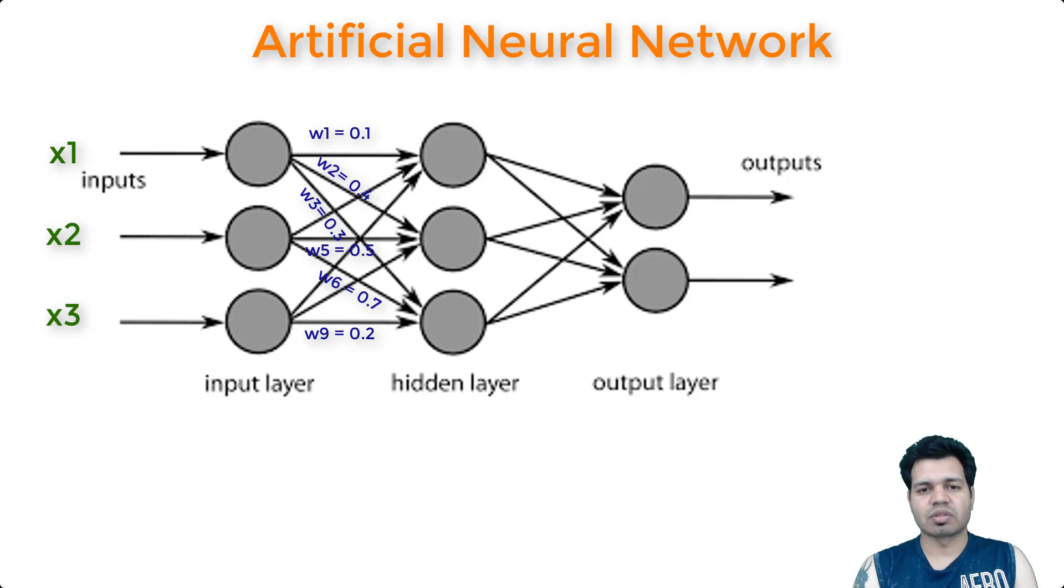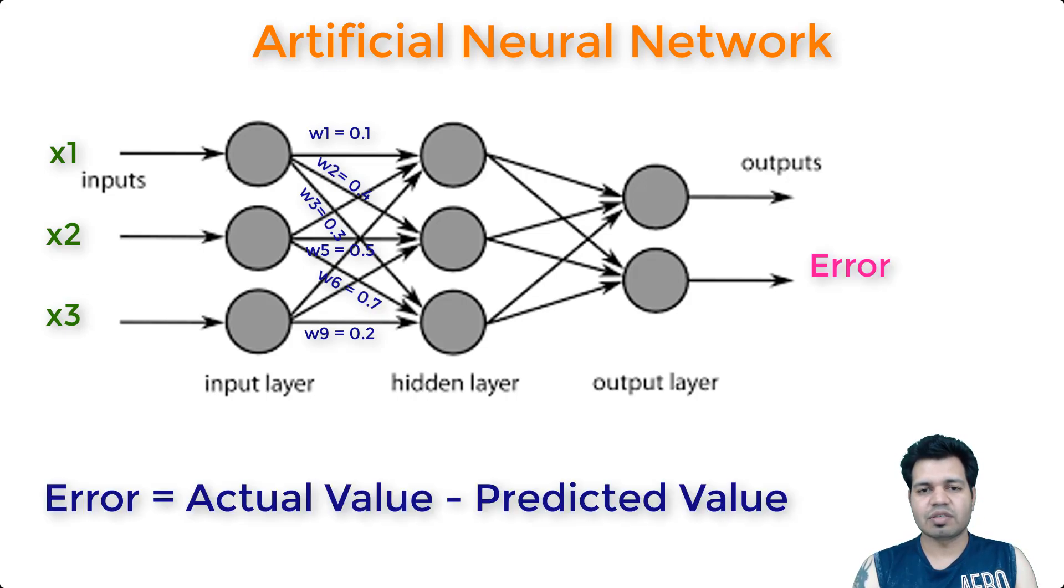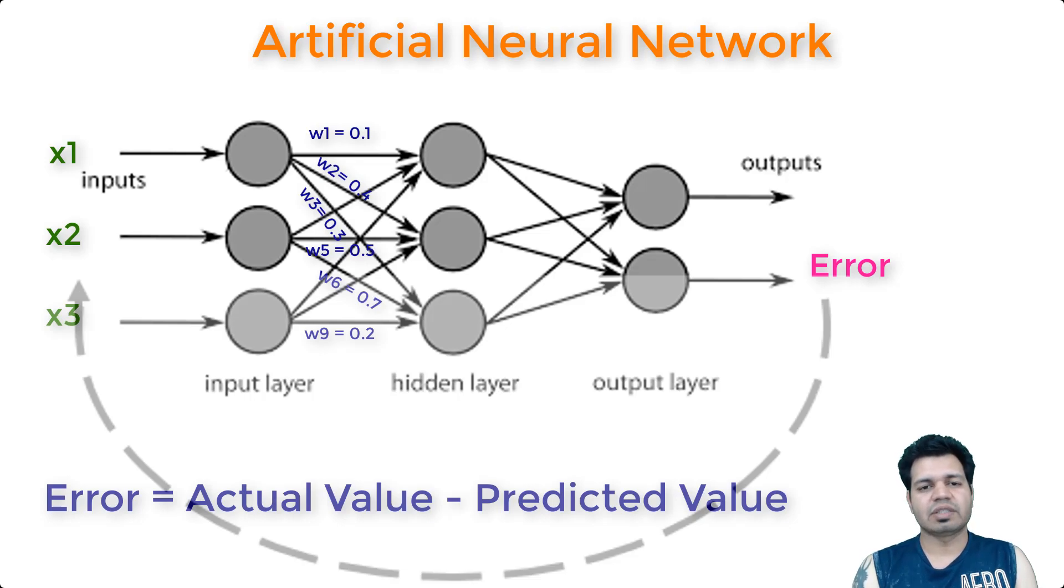When I'm saying this process repeats multiple times, it is in such a way that the weights for these connections get updated continuously during the whole training process. You move from left to right to get the output. Once you get the output, there is an expected value as well as an actual value. The difference between the expected and actual value is called error. This error is fed back to the input once again, and the weights get updated multiple times. In a nutshell, during this entire process, the weights of these connections get updated continuously during the whole training process to get the optimized value of weights as the model learns from the data.